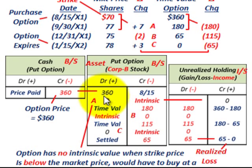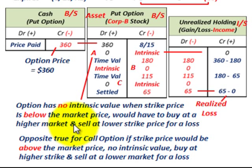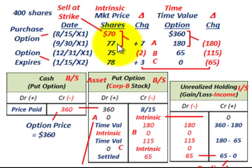To recap: the option has no intrinsic value when the strike price is below the market price for a put option. You'd have to buy at a higher market price and sell at a lower strike price, resulting in a loss, so you wouldn't execute the option. For a call option, the opposite is true: if the strike price is above the market price, there's no intrinsic value — you'd buy at a higher strike price and sell at a lower market price for a loss. That's why the put option account gets assigned no value for the market price change in shares.